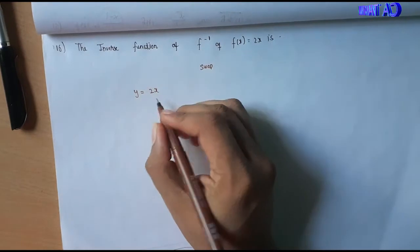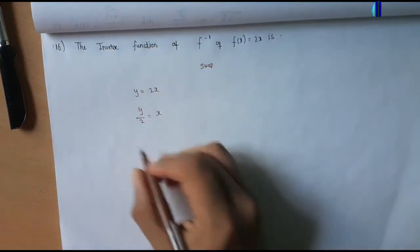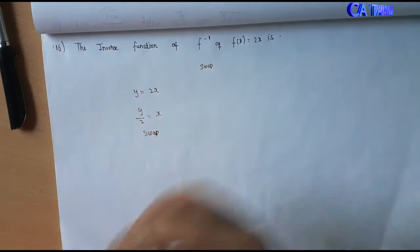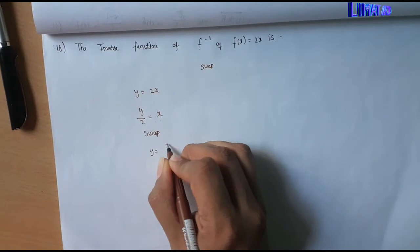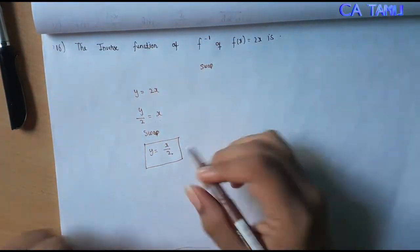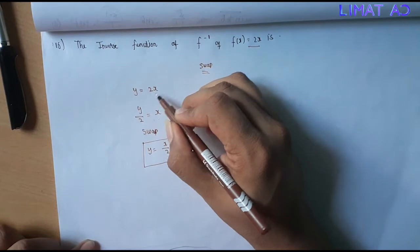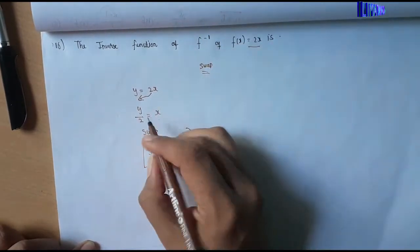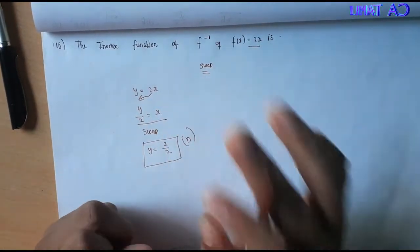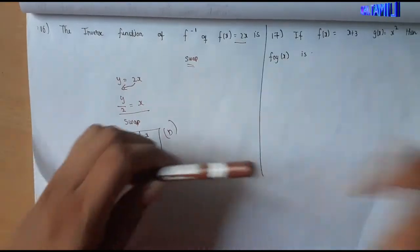So y is equal to 2x. Now I write x is equal to y divided by 2. Then the inverse function — swapping x and y — gives y equals x divided by 2. So f inverse of x is x divided by 2, which is option B.